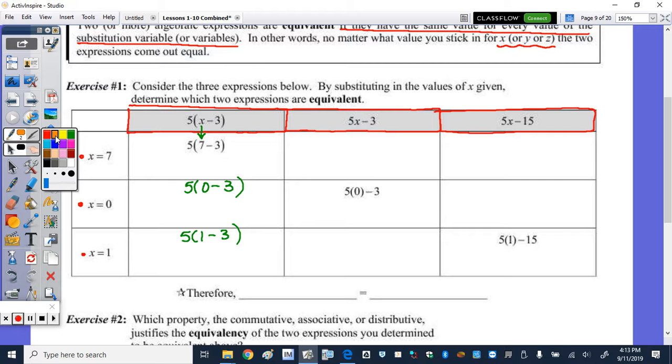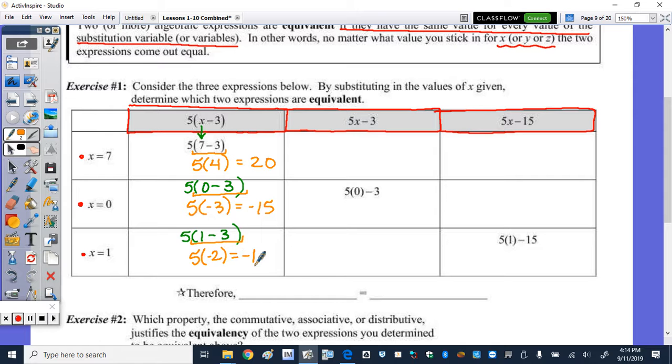In doing the math now, following order of operations, we need to do the parentheses first. And we end up with 5 times 7 minus 3 is 4, which is 20. 0 minus 3 is negative 3. And then 5 times negative 3 is negative 15. And in the bottom, 1 minus 3 is negative 2. So then 5 times negative 2 is negative 10.